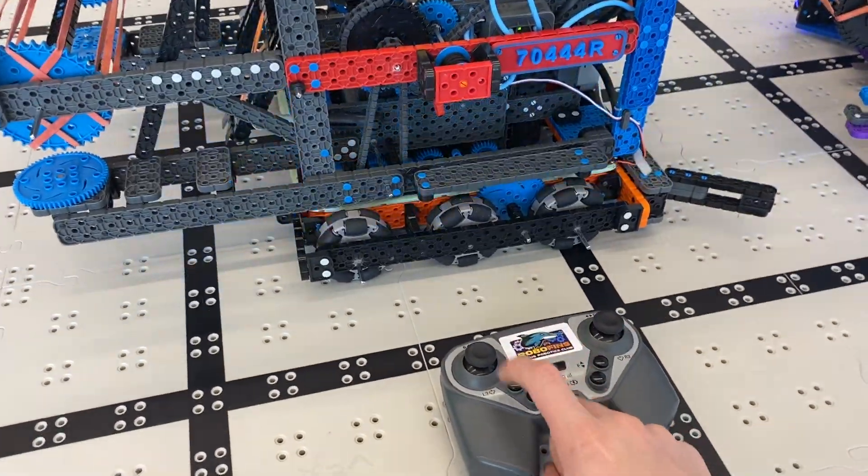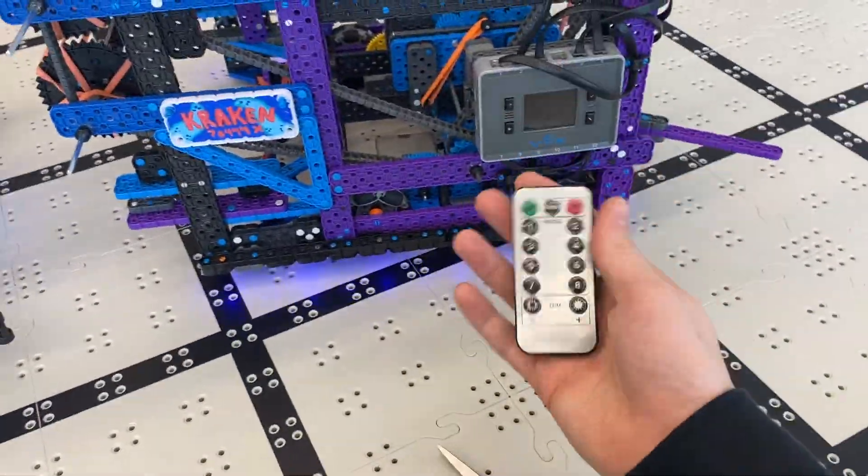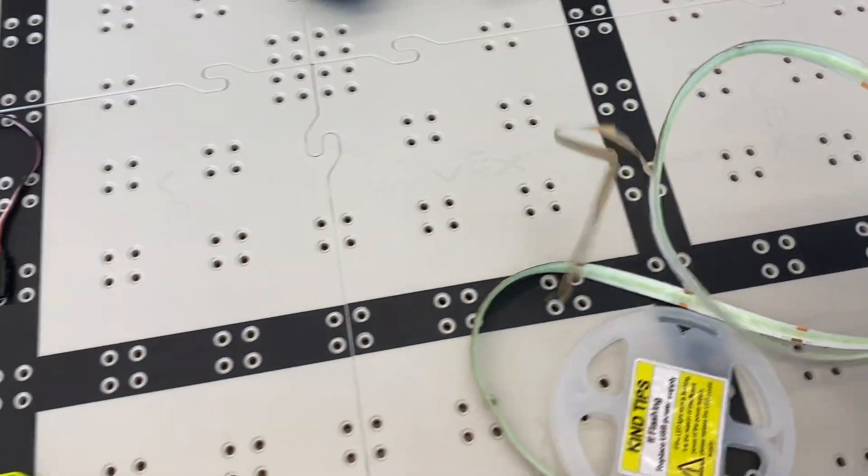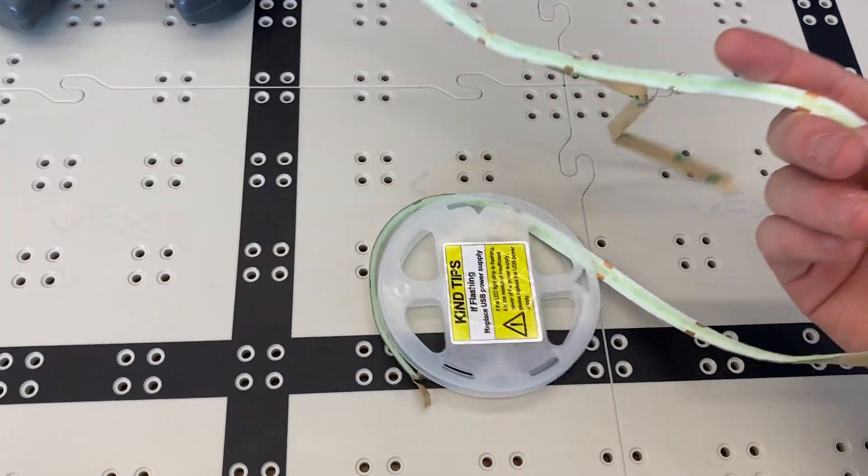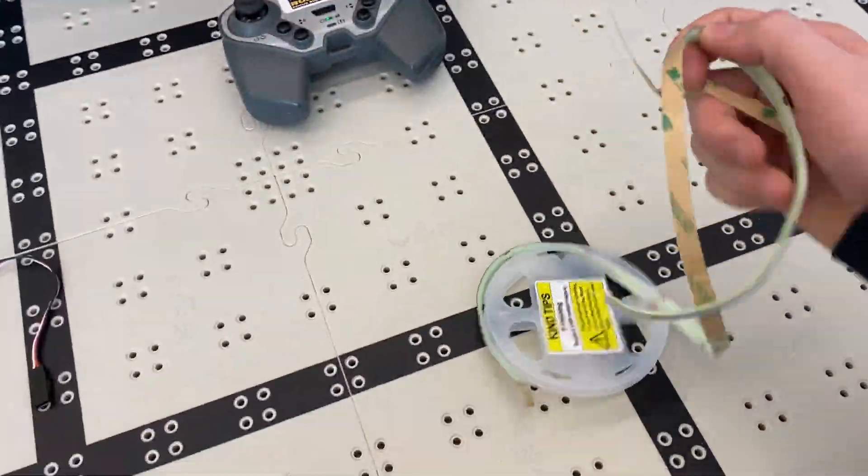You got two options: COB, which requires soldering, or regular LED strips, which don't but require a separate controller and double-A batteries. That's how you do it. Everything will be in the description. These were kind of hard to find because we copied this from a Taiwanese team who didn't post the link. We'll be posting for everyone who asked.